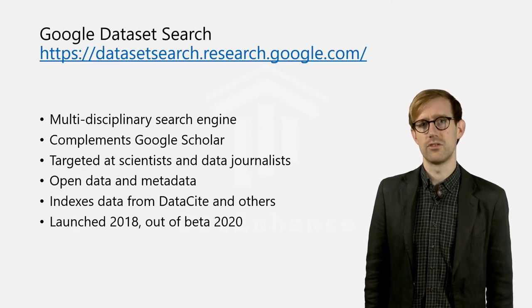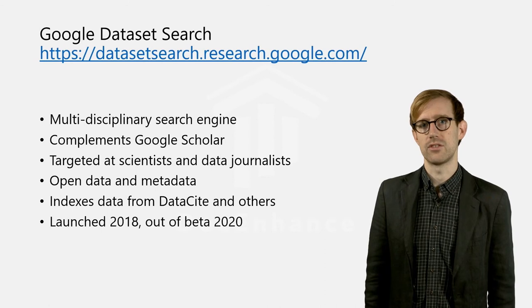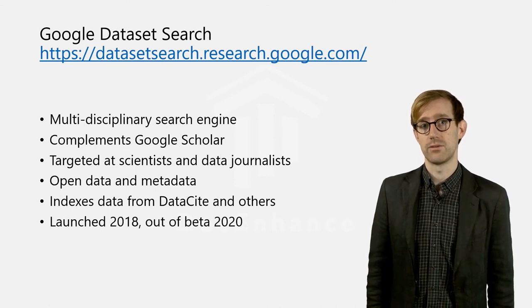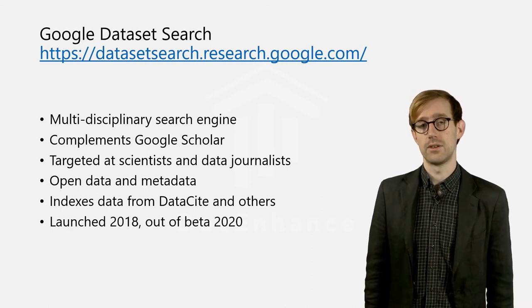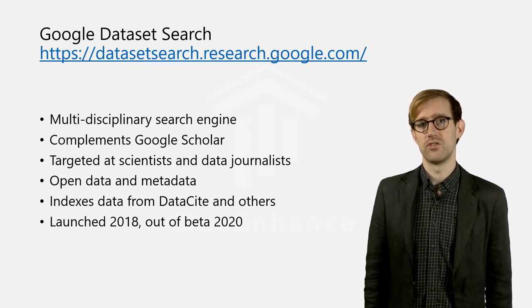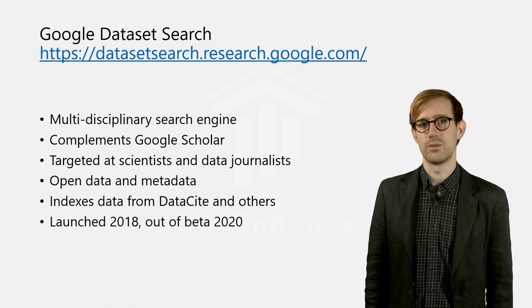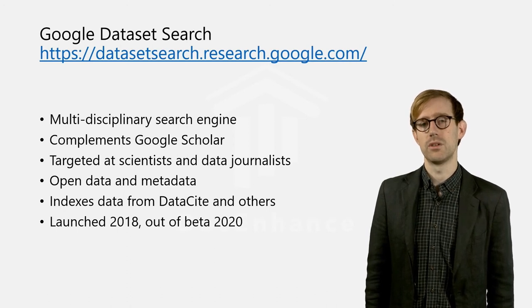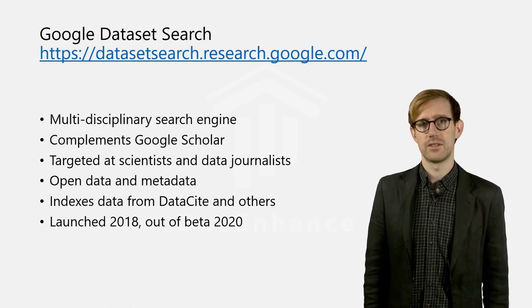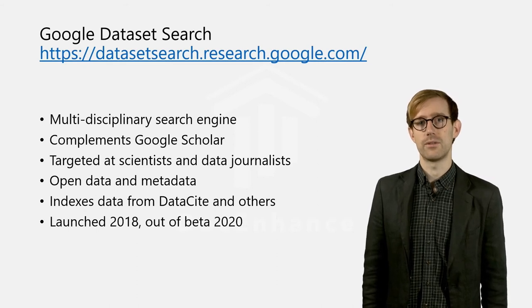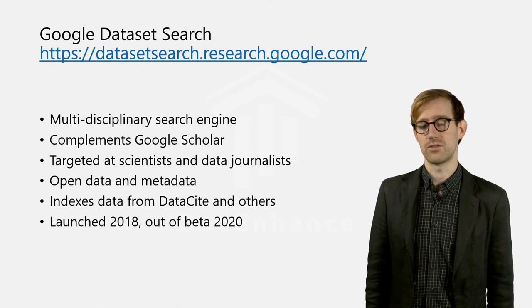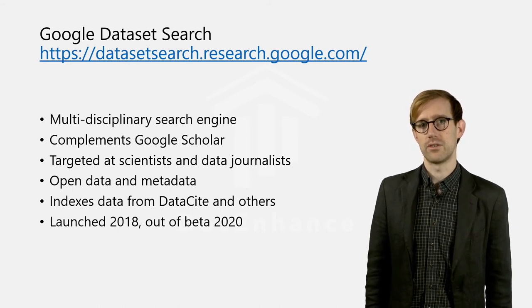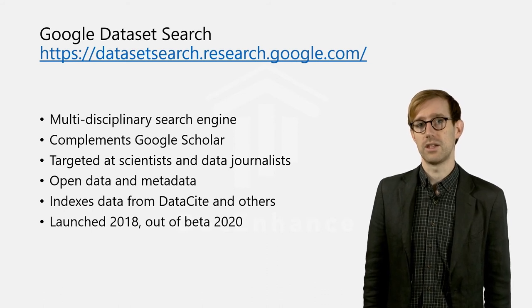The third and last data search engine we will look at is Google Dataset Search, which was launched in 2018 and moved out of beta in 2020. It shares features and qualities with Google Scholar and is another service by the search engine giant directed towards the global research community, intended to complement Google Scholar. The aim of Google Dataset Search is to unify the many thousands of different repositories for datasets and make all data searchable without moving the actual data, thereby addressing the issue of the fragmented platform for dataset publication.